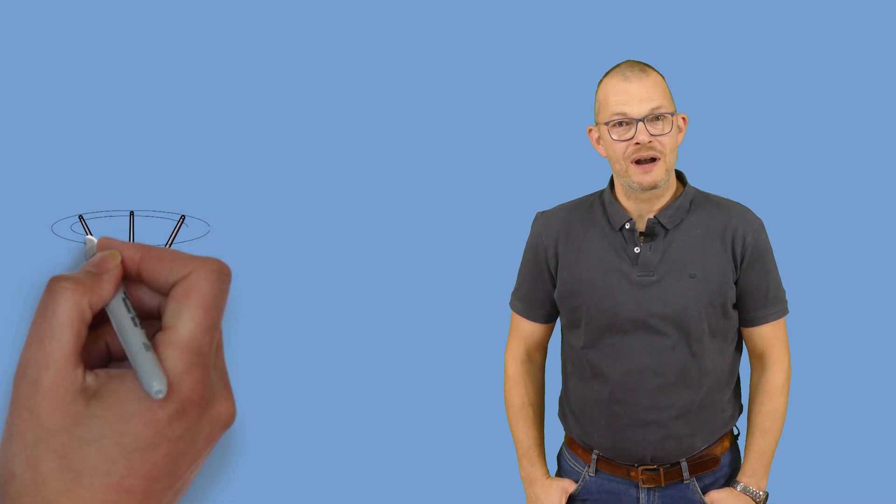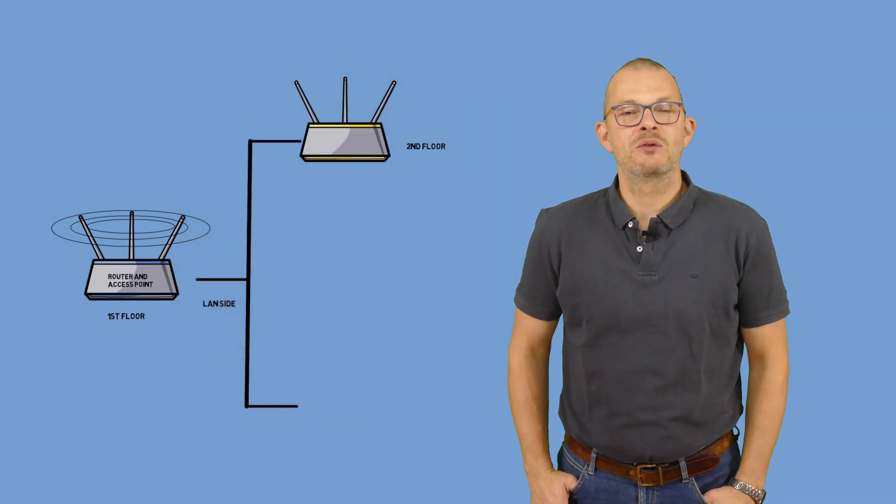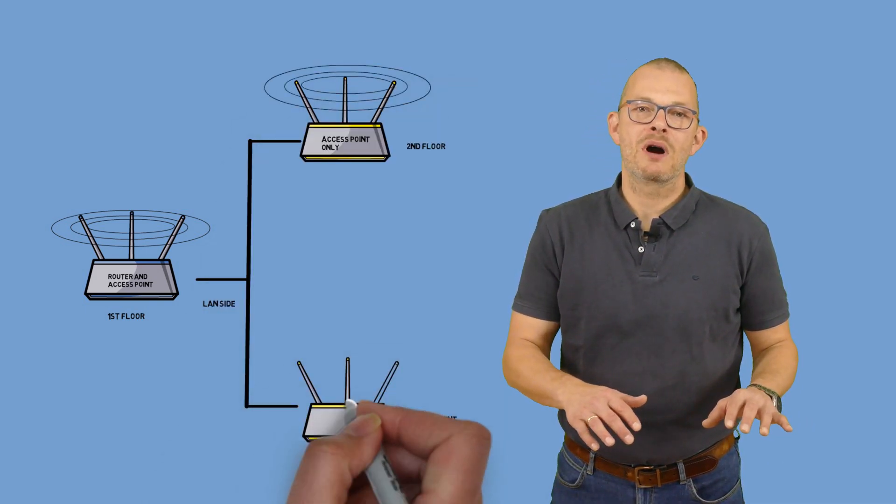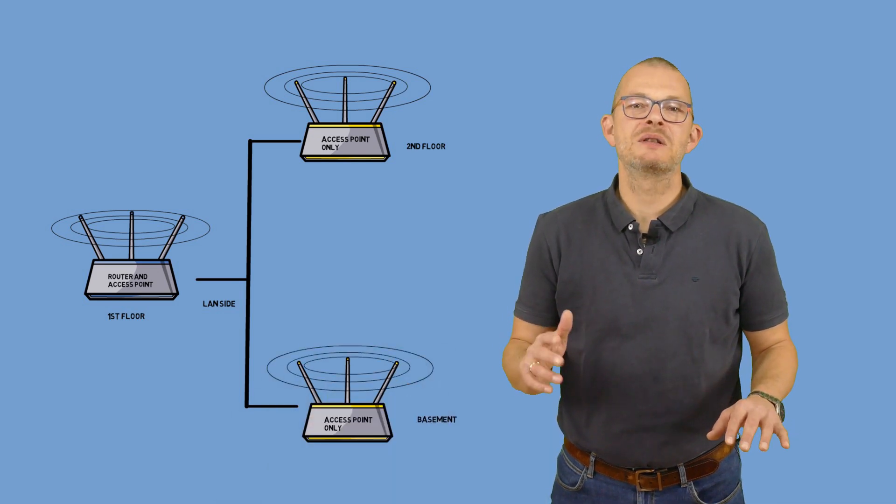There are many questions on the net on how to extend your Wi-Fi with a second Wi-Fi access point or how to connect a second router. Let's imagine you have a house with two floors and you have a Wi-Fi access point on the first floor. You now want to extend the reach of your Wi-Fi network to the second floor. How can this be achieved?